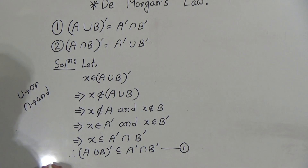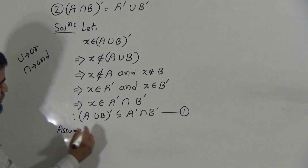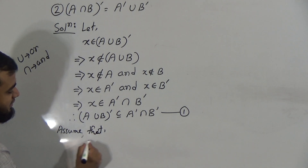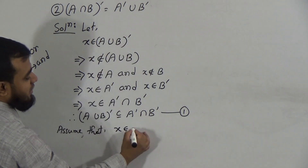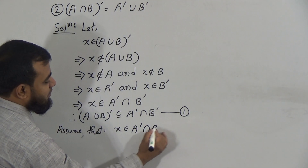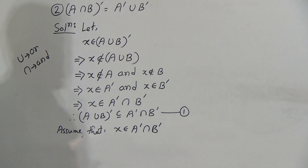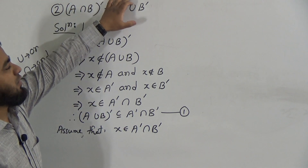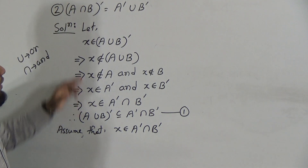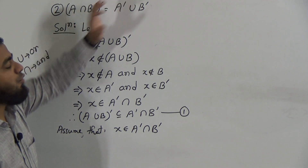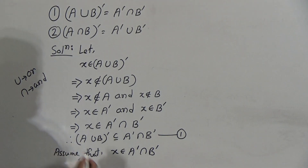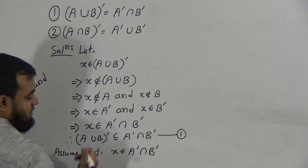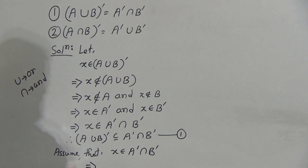Again, we assume that x belongs to the right hand side, A prime intersection B prime. We need to prove these two are equal to each other. We already proved the left hand side is a subset of the right hand side. Now we are going to prove the right hand side is also a subset of the left hand side.